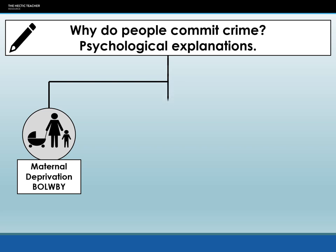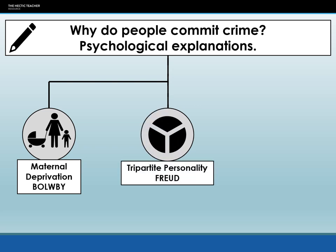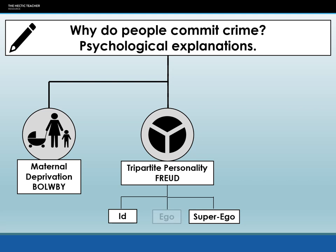Secondly, there is the tripartite personality theory. Freud put forward the idea that criminal behavior is caused by an imbalance between the id, ego, and superego. The id is the part of the personality made up of basic urges, the superego is our morality, and the ego balances the two. Freud states that when the ego doesn't work and there is too much id or too much superego, it can lead to criminal and deviant behavior. Too much id can lead to impulsive and aggressive behavior, whereas too much superego can lead to judgmental behavior and moral rigidity.